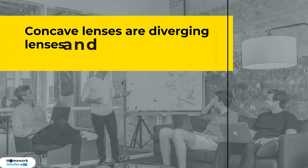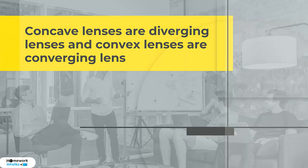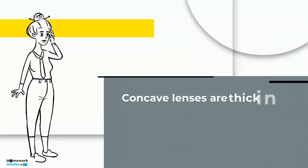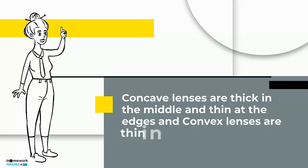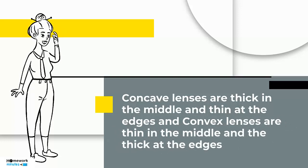Concave lenses are diverging lenses and convex lenses are converging lenses. Concave lenses are thick in the middle and thin at the edges, and convex lenses are thin in the middle and thick at the edges.